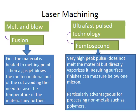The second type is ultra-fast pulse technology, also known as femtosecond technology. A very high peak pulse is used — it doesn't melt the material but directly vaporizes it, and the resulting surface finish can measure below one micron, giving extremely good accuracy. It's particularly advantageous for processing non-metals such as polymers. The key benefit is that there is very little heat affected zone, so because the material is directly vaporized rather than melted, the metal doesn't get hot and there is less chance of property or dimensional changes due to heat.